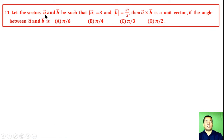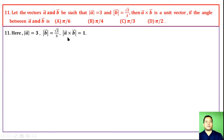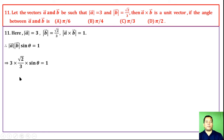Question 11: Let vectors a and b be such that |a| = 3 and |b| = √2/3. Then a cross b is a unit vector if the angle between vector a and vector b is what? Since |a cross b| = |a||b|sin θ = 1, substituting |a| = 3 and |b| = √2/3, we get sin θ = 1/√2, which equals sin(π/4). Therefore the angle is π/4. The correct option is B.